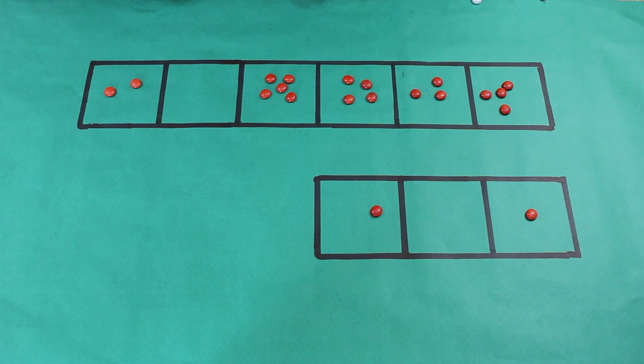Alright, so, here we have a much bigger problem, as you can see. Yeah, we're done with the baby stuff. Alright, let's get going. So, there's one new thing. As you can see, there's no dots in the box right here. There's no X to the fourth. So, what we have here is two X to the fifth, plus five X cubed, plus four X squared, plus three X, plus four, divided by X squared plus one.